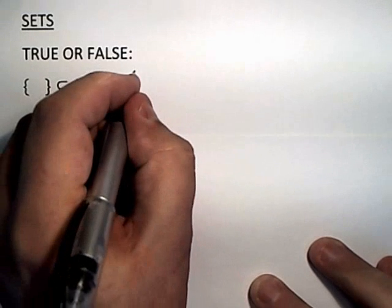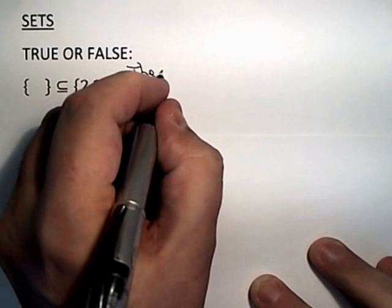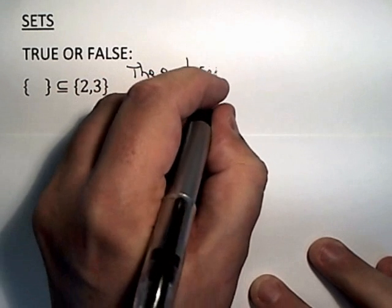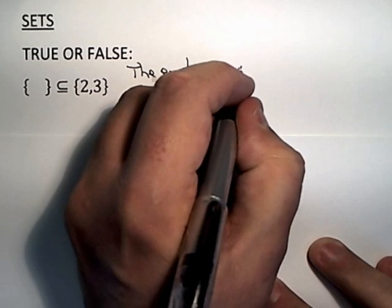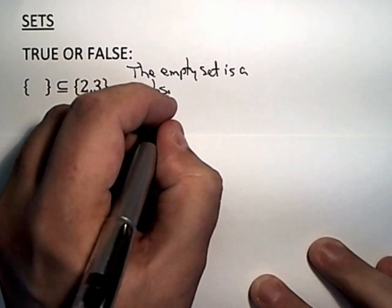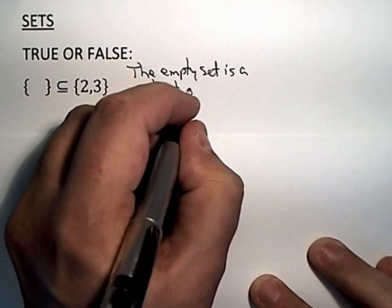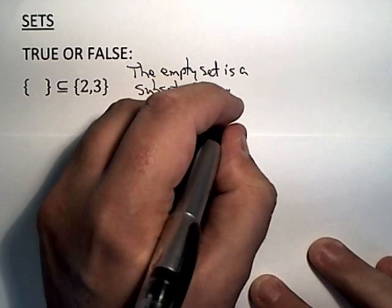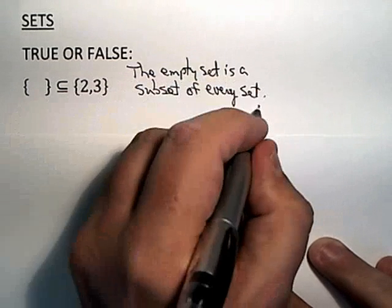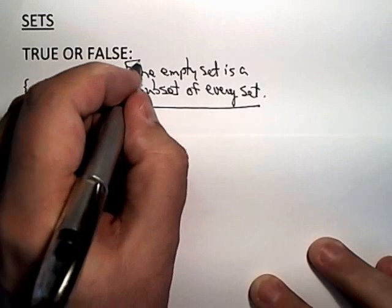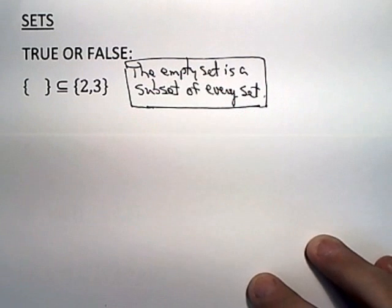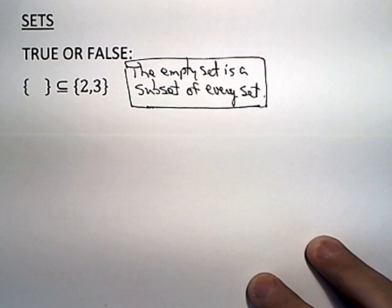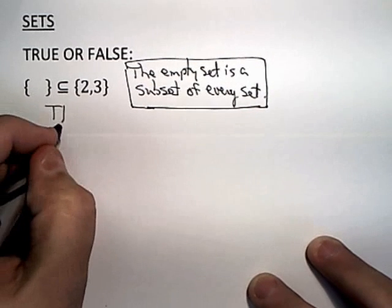You really only have to know one thing here, and it's something we've talked about, and that is that the empty set is a subset of every set. If you know that little factoid, the empty set is considered to be a subset of every set, then obviously this is true.